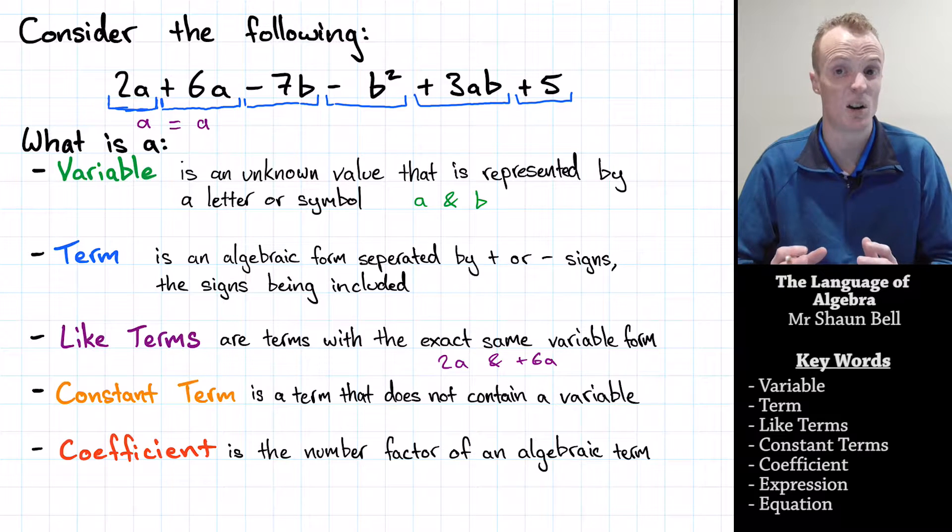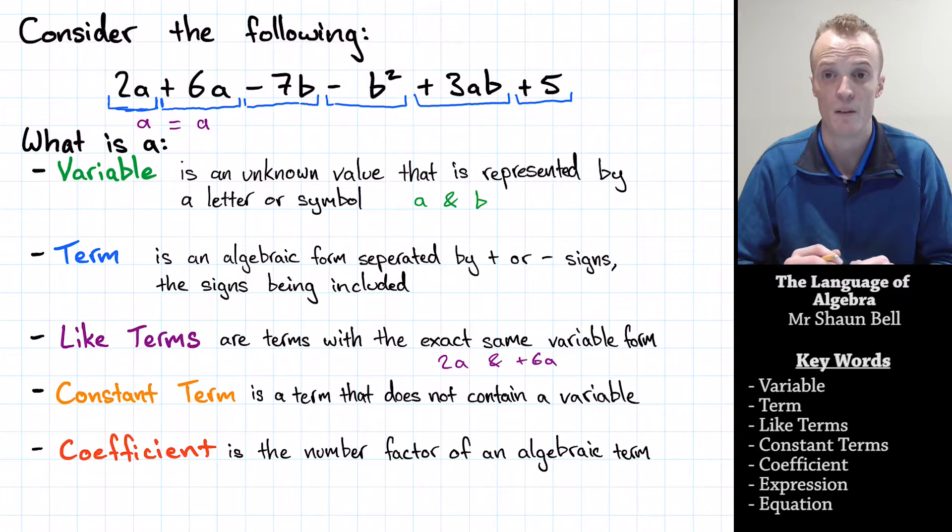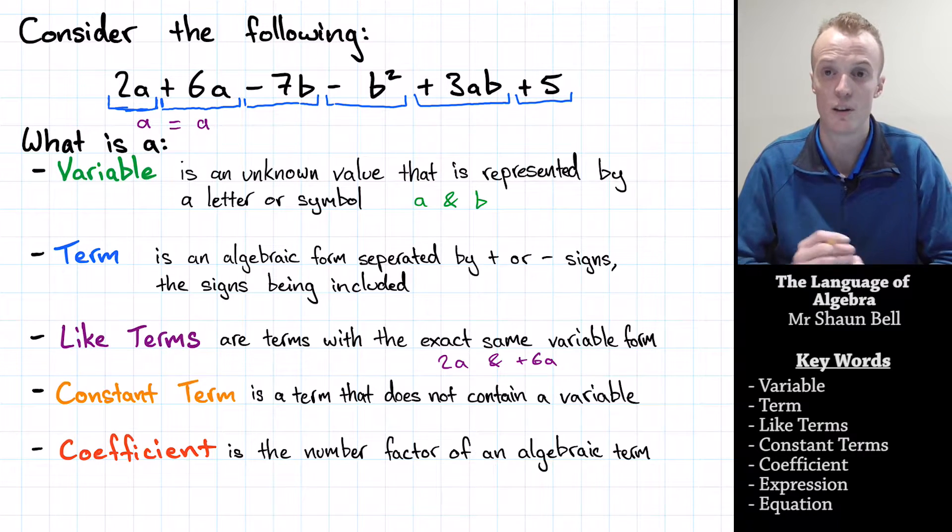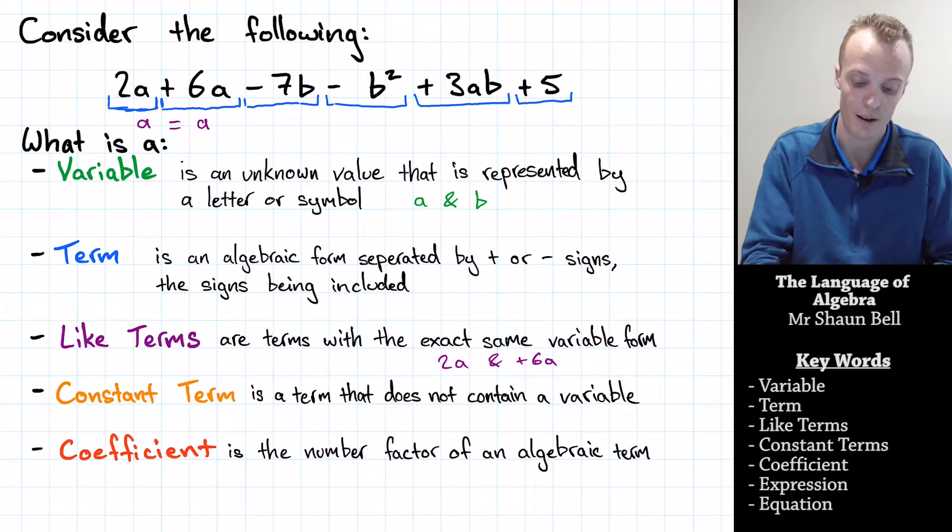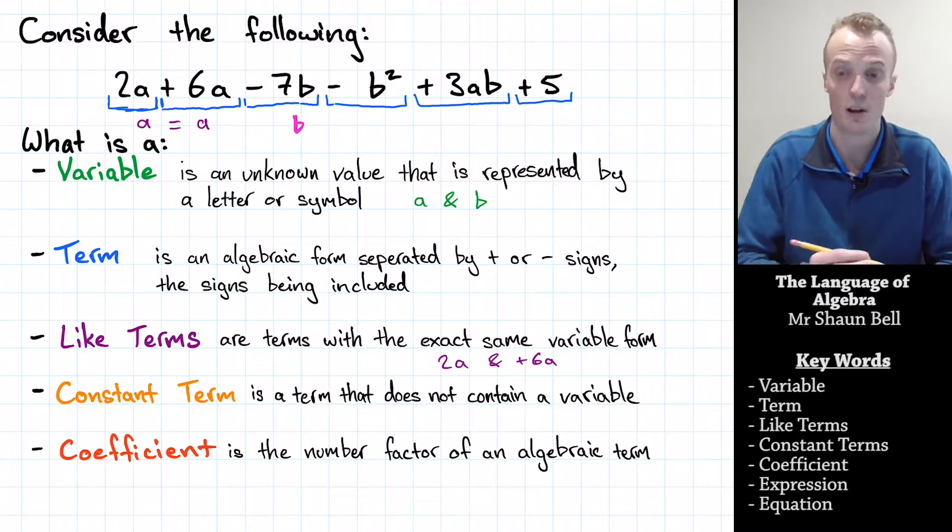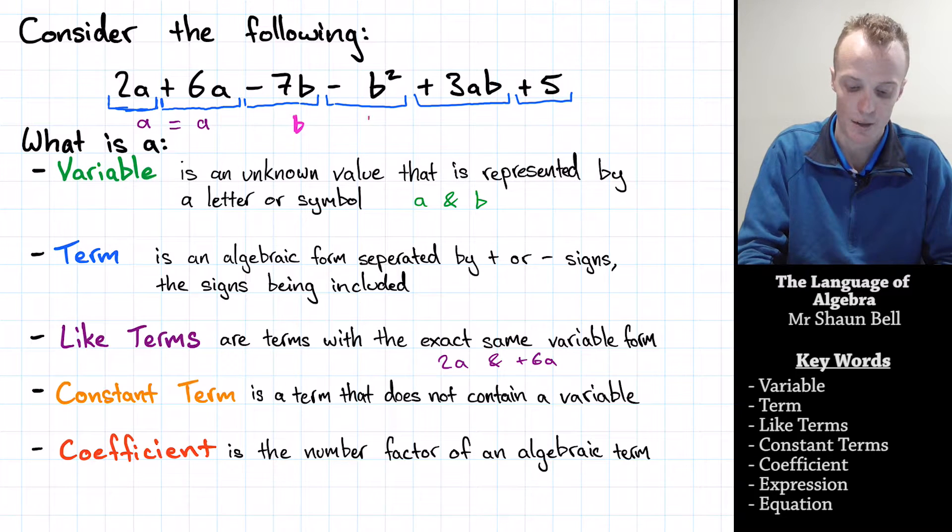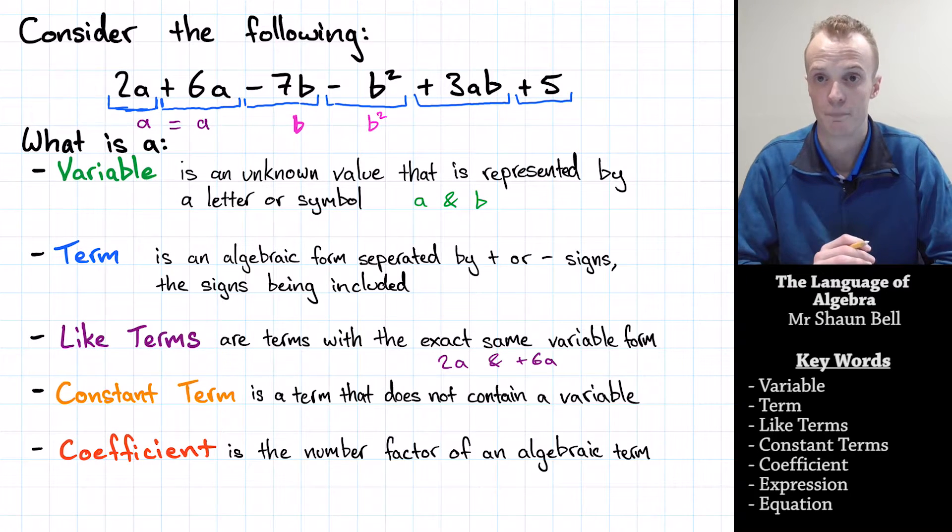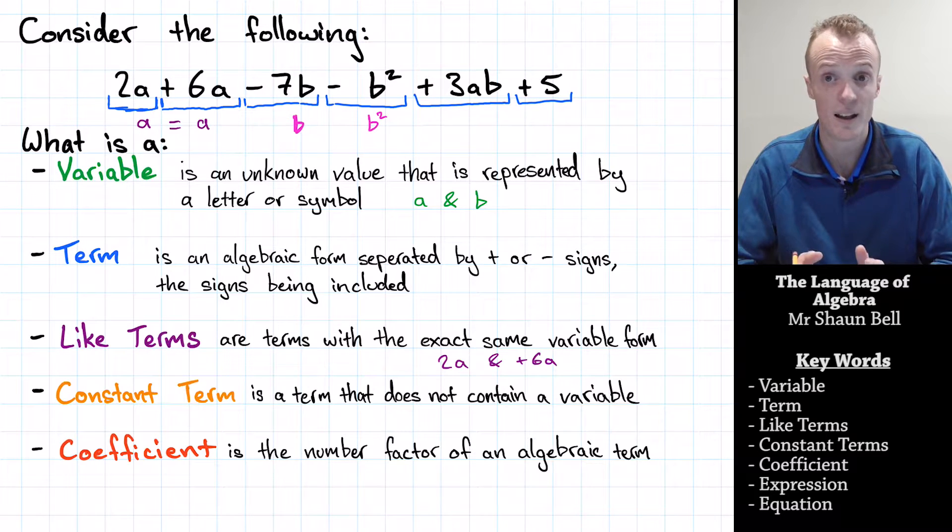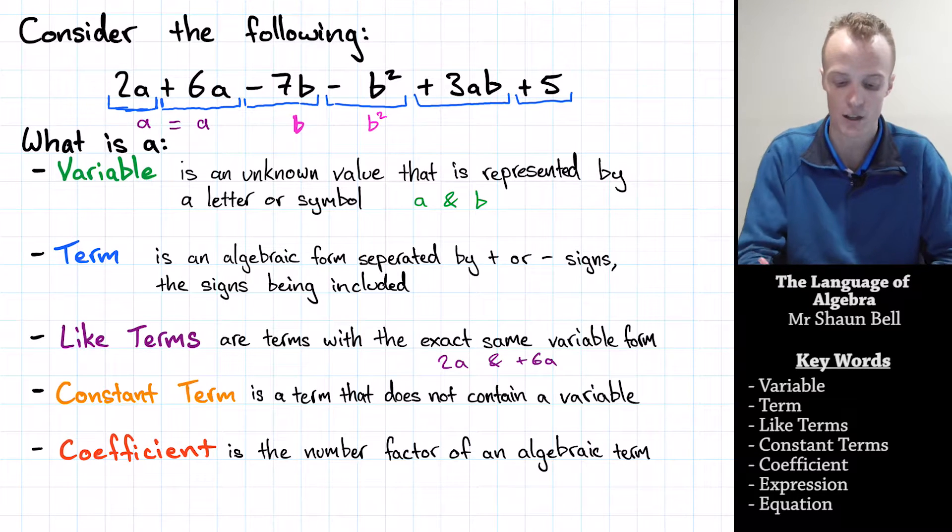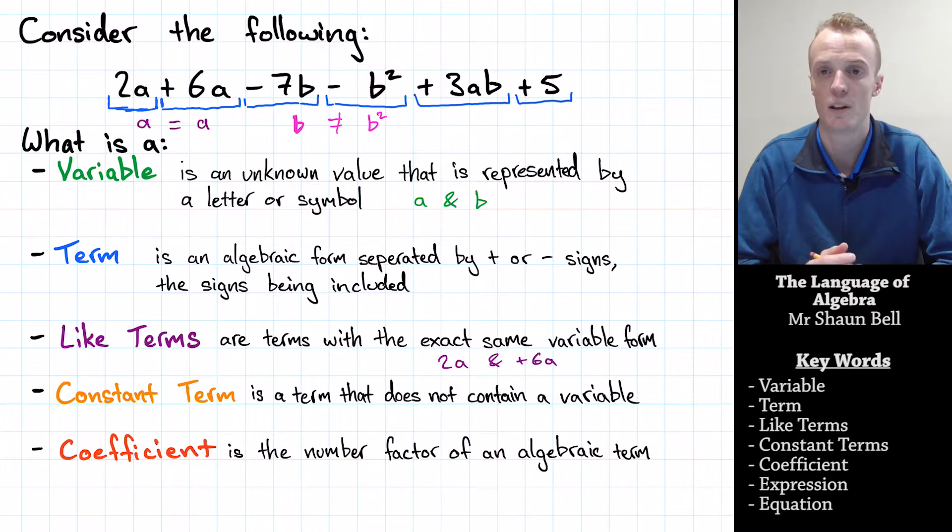So what about two terms that don't have the same variable form? Well, we call these unlike terms. Let's take a look at an example using the third term and the fourth term. In the third term, the variable format is the B part of the term. In the fourth term, the variable format is the B squared part of the term. Now, immediately when we write this down, we can see that the variable parts of these two terms do not match each other, so they are not equal to each other. Therefore, they are unlike terms.